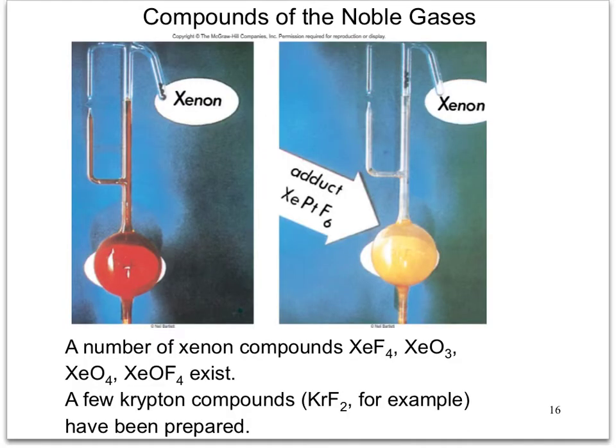Xenon, krypton, and argon have all been made to react. In order to make these elements react, we very often need to use fluorine in addition to other things like oxygen.